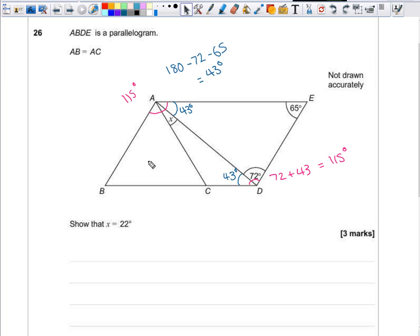Well if that's 65, that angle there must also be 65 degrees. If AB and AC are both equal lines of equal length, that would mean that this is an isosceles triangle and that would also make this angle over here 65 degrees.